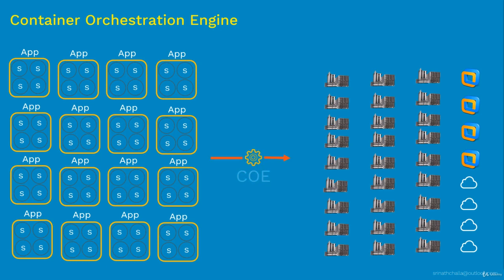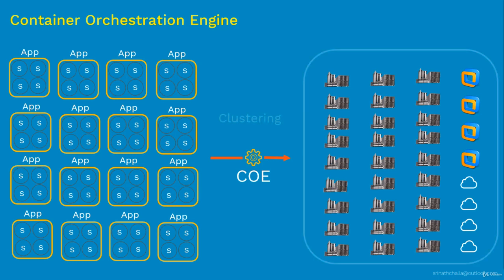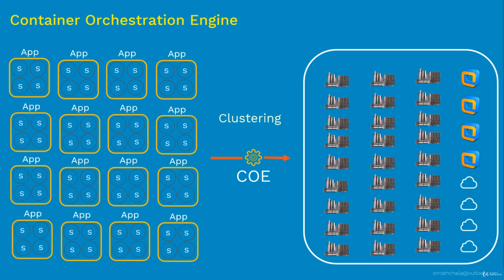The two primary things any container orchestration engine performs are clustering and scalability. For clustering, most tools follow this pattern: we have a master server where the orchestration engine is installed, then we join worker nodes together with the master to form a cluster. The master server acts as a cluster manager, which manages the worker nodes. By performing clustering, it opens opportunities for fault tolerance and scalability.